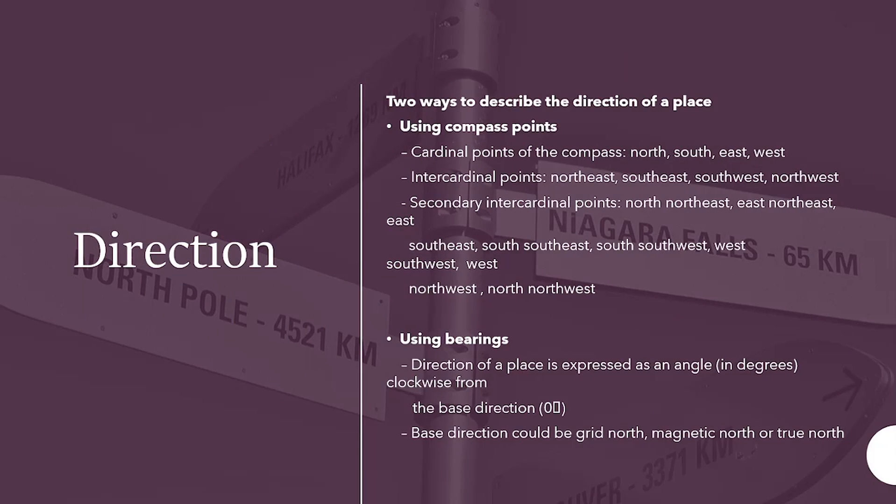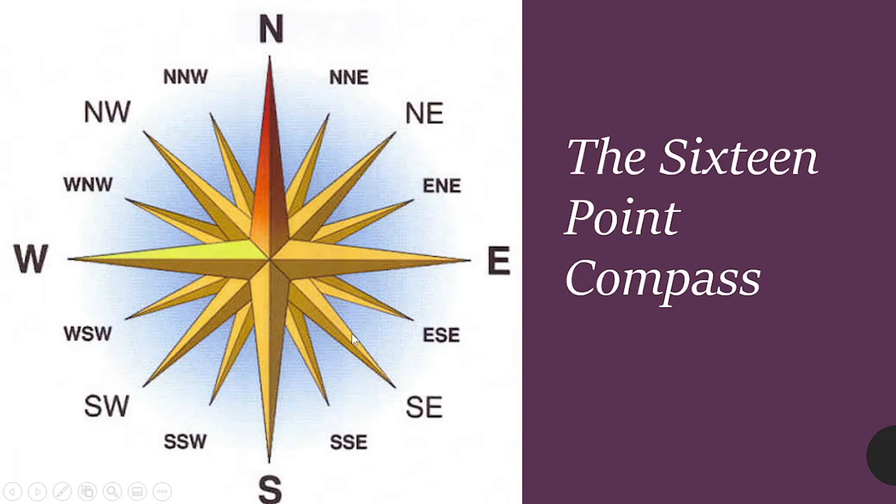Direction. Two ways to describe the direction of a place using compass points. Cardinal points of the compass: north, south, east, and west. Intercardinal points: northeast, southeast, southwest, northwest, and so on. Basically, you have your four-point system, north-south, east-west. In between those, you would have northeast, southeast, southwest, northwest. And then you have the secondary ones, which would be north-northeast, south-southeast, west-southwest, and so on.